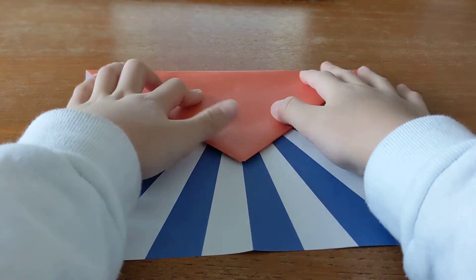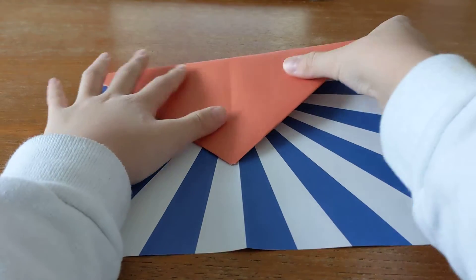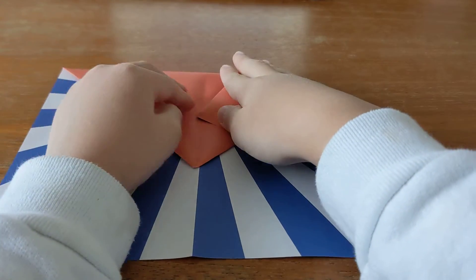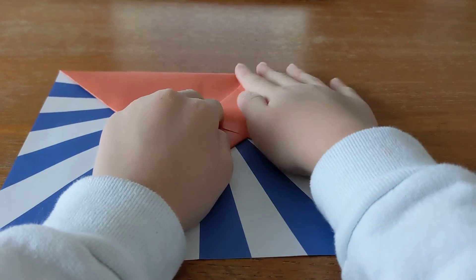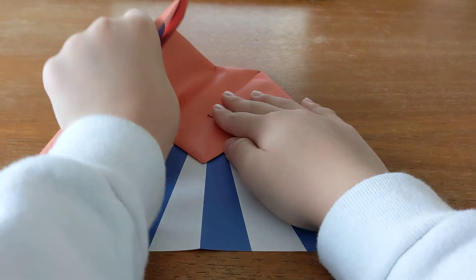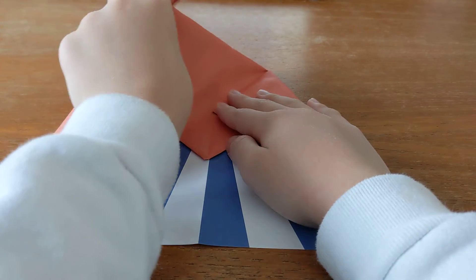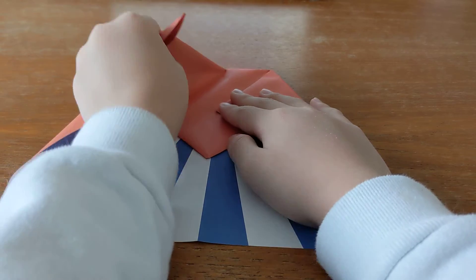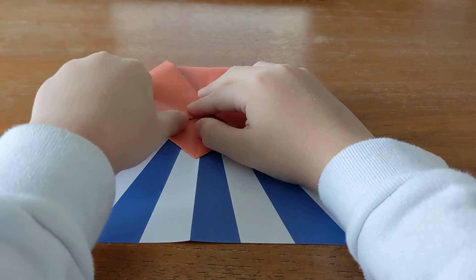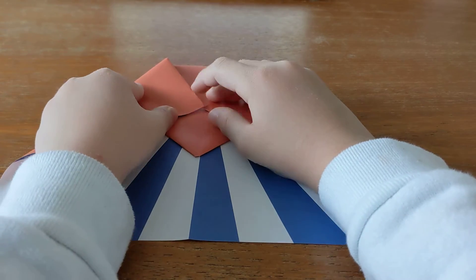It should look like a small envelope. Then grab this part right here and fold it into there. As you can see, they should come together.